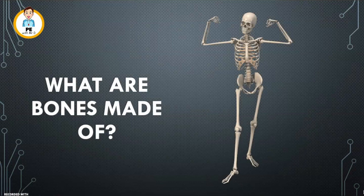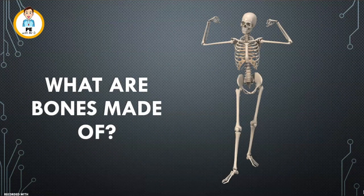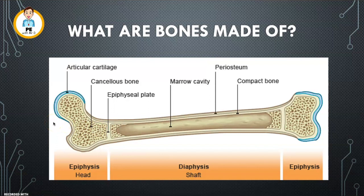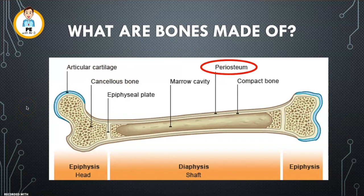What are bones made up of? To find out we need to zoom in a little bit. Here's an example of a long bone — you'll find this in your legs and arms. There are lots of different features of this bone; we're going to focus on four in this video. Number one is the periosteum. This is like the eggshell — the outer layer of the bone, as you can see here.